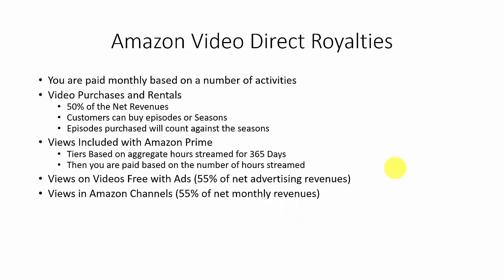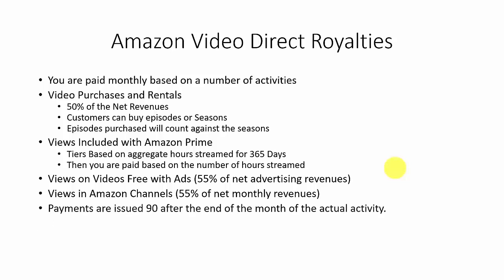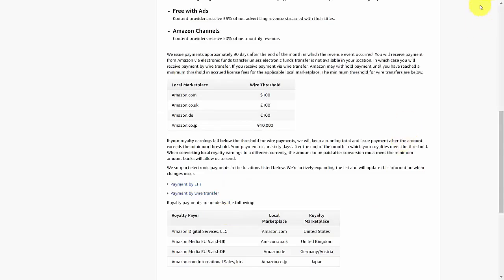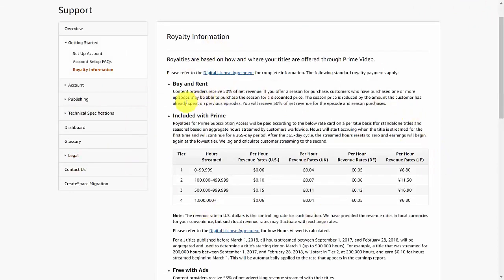You'll also be paid 55% of net monthly revenues from individuals watching your videos through Amazon channels. Payments are going to be issued 90 days after the end of the month in which the activity occurs, made to the bank account you've set up. Wire transfers are also available, but you'll need to meet a certain dollar threshold. You can look at the details of thresholds, tiers, and prime streaming in the royalty information section of your support area.